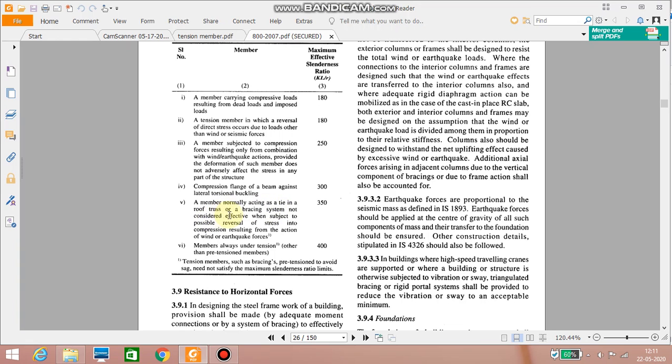They have mentioned it is a truss member or bracing system not considered effective when subjected to possible reversal of stress into compression resulting from action of the wind or earthquake force. Also in the case of tension members such as bracing pretension to avoid sag need not satisfy the maximum slenderness ratio limit.